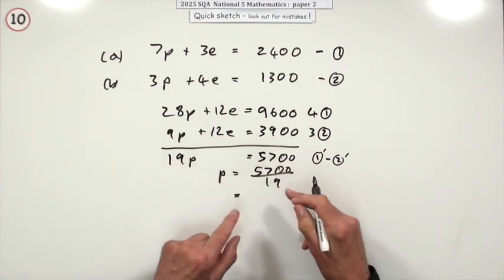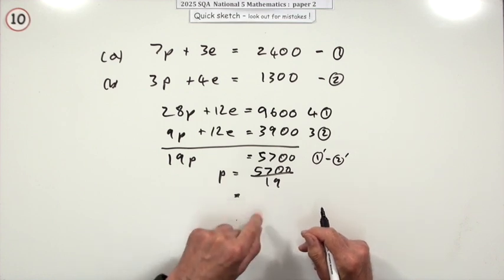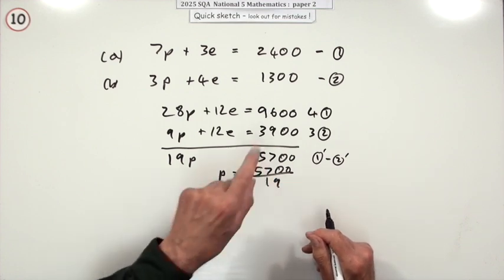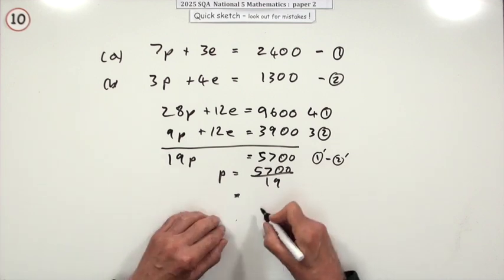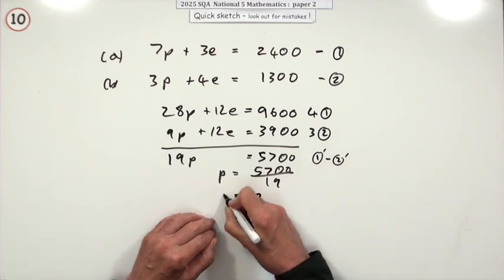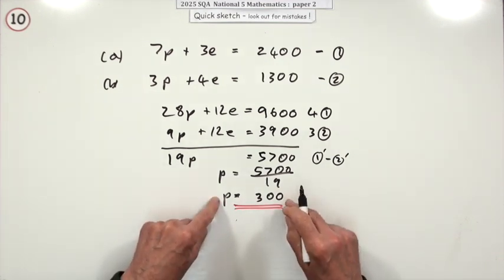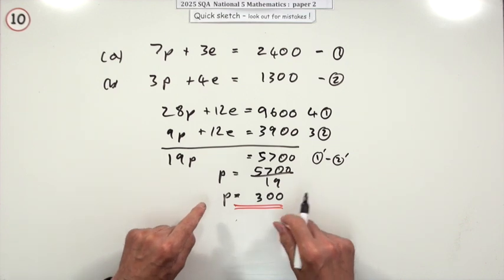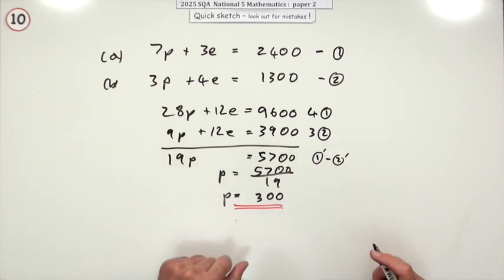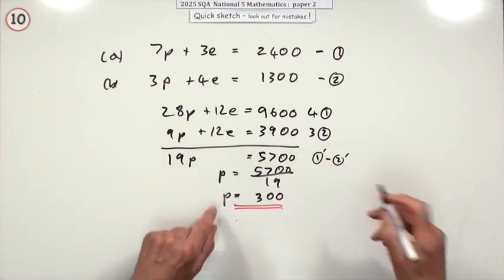So p is going to be 5,700 over 19. Now that is an exact number there. There's three of them, that'd be like 60, three short of 60. You don't use your calculator, do you? 300. p is 300. Then don't put kilograms or whatever, because that's just the weight in kilograms. So p is the numerical value.